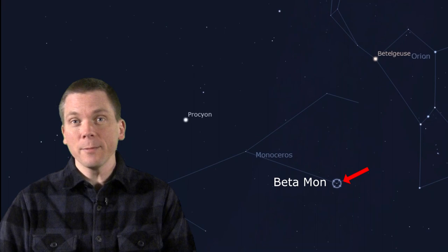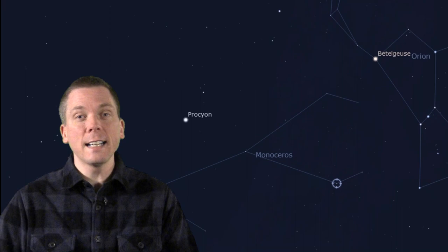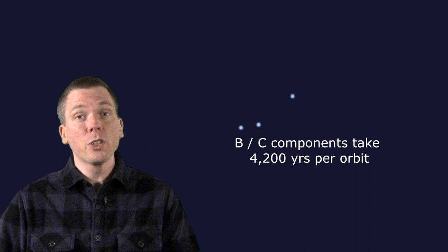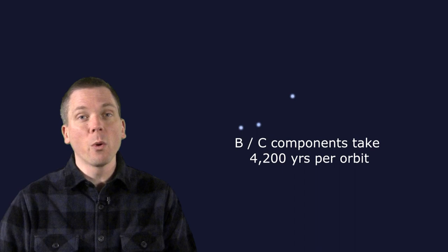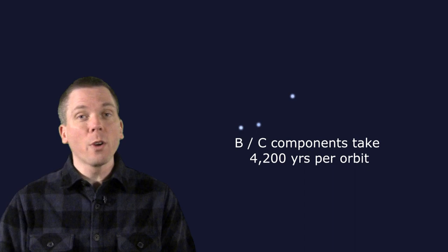The B and C stars are 590 times the Earth-Sun distance and take 4,200 years to orbit each other at just 2.8 arc seconds apart from our perspective. The A star is more than 2.5 times as far away from the closer pair and orbits both of them over a period of 14,000 years. That further distance makes it a bit easier to split at 7.4 arc seconds.